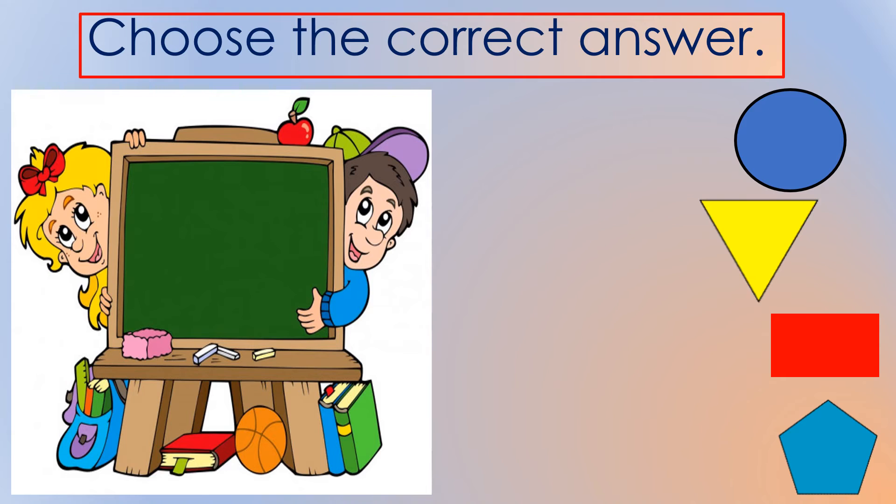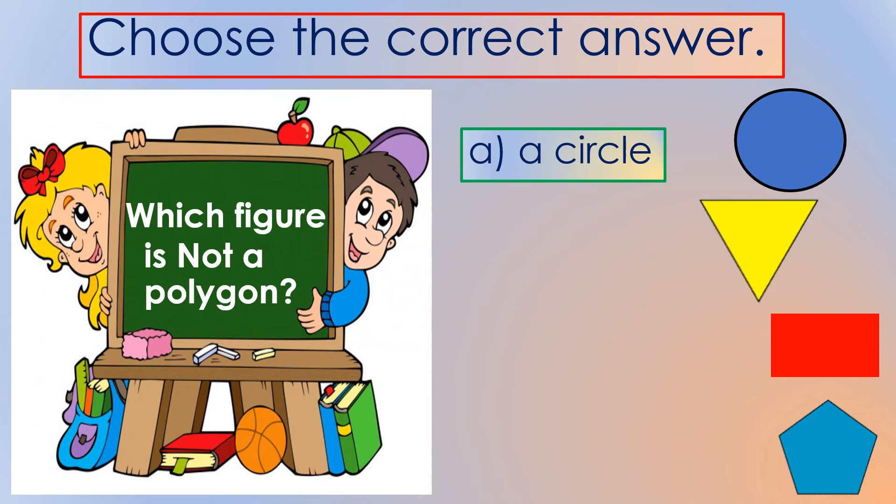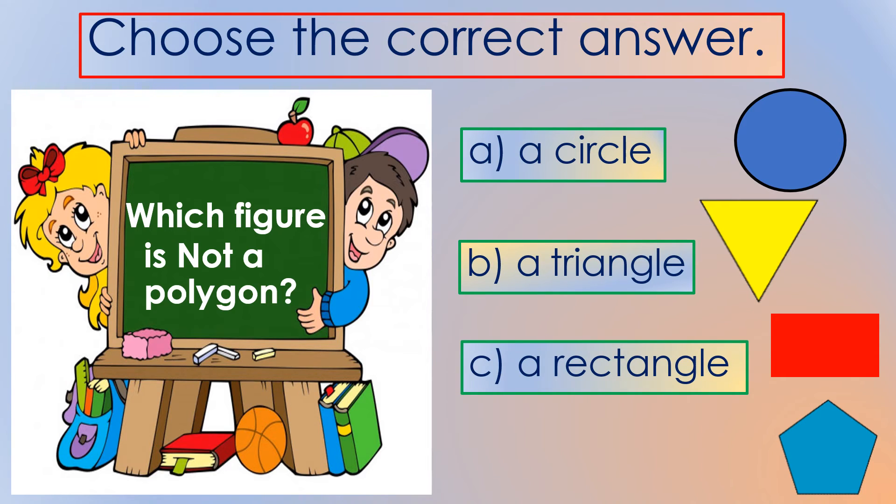Let's move on to the next question. Which figure is not a polygon? A, a circle. B, a triangle. C, a rectangle. Or D, a pentagon. So which one do you think is not a polygon? The correct answer is letter A, a circle. A circle is not a polygon because it doesn't have any sides.